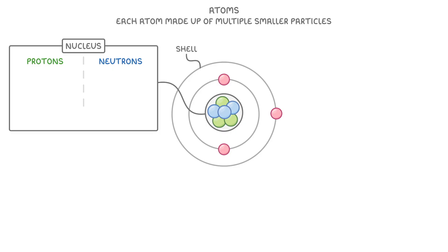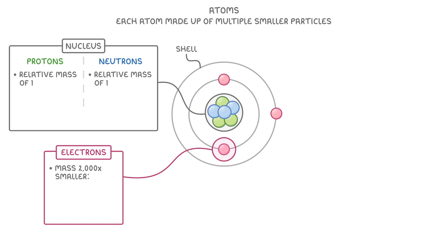Now, the most important thing to remember here is the structure of the atom that we've just been through, and also the relative mass and charge of each of the particles. The protons and the neutrons have the same mass, so we say that they both have a relative mass of one. Electrons meanwhile are comparatively tiny and have a mass 2000 times smaller, which is often written as just very small or sometimes even zero.